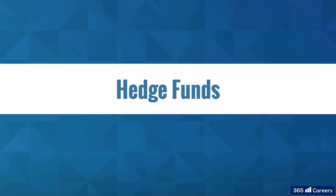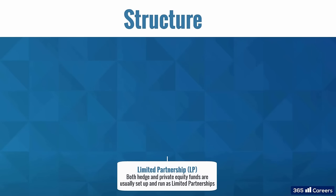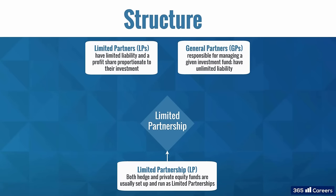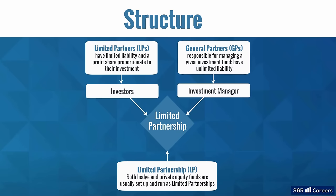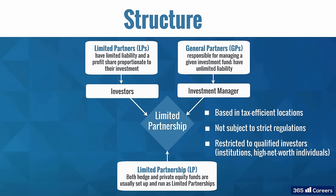Before we start, we will make some clarifications regarding the common legal and fee structures of alternative investments. Both hedge and private equity funds are usually set up and run as Limited Partnerships, or LP. This type of legal structure includes General Partners, or GPs, and Limited Partners. GPs are responsible for managing a given investment fund and have unlimited liability. LPs, on the other hand, are the investors in the fund. They have limited liability and a profit share proportionate to their investment. Limited partnerships are usually based in tax-efficient locations and aren't subject to strict regulations, as they are not typically offered to the general public. Instead, LPs are restricted to qualified investors, such as institutions and high-net-worth individuals. These investors are generally expected to be more knowledgeable and able to take higher risks.